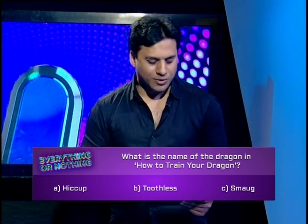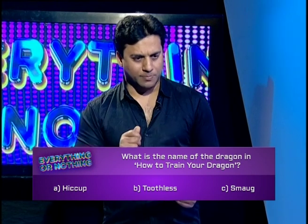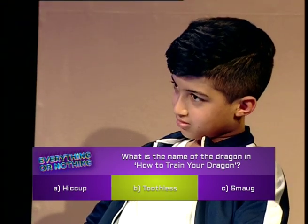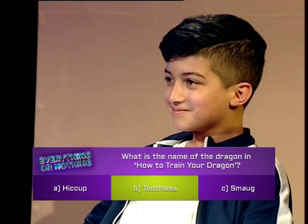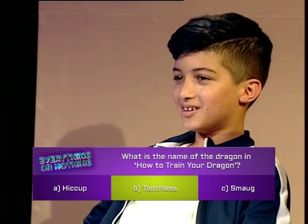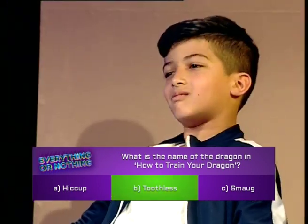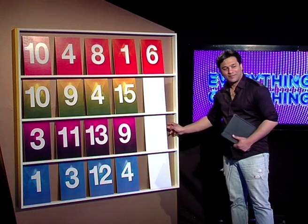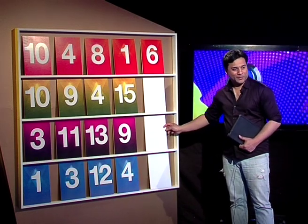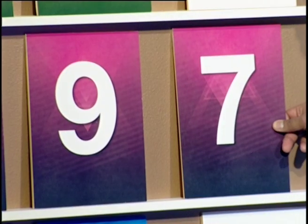What is the name of the dragon in How to Train Your Dragon? Is it A, Hiccup. B, Toothless. Or C, Smaug. B, Toothless. You sure? Yeah. And you're right. Nine was your previous card. Higher or lower? Lower. And it's lower. Well done.